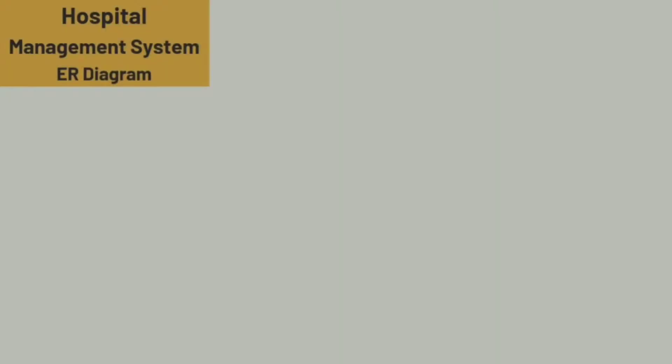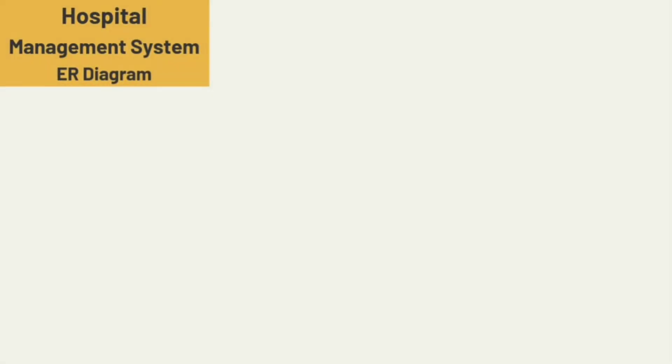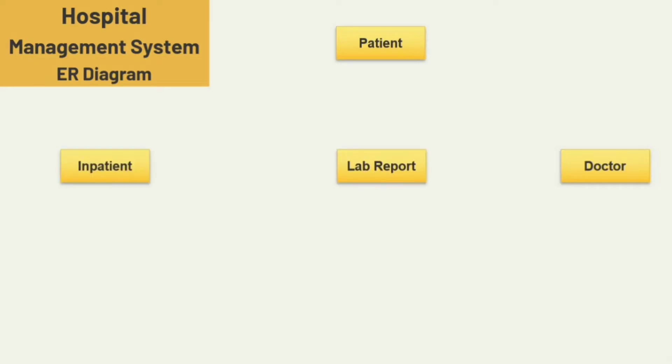The main entities of the hospital management system are: patient, doctor, lab report, inpatient, outpatient, bill, and room.